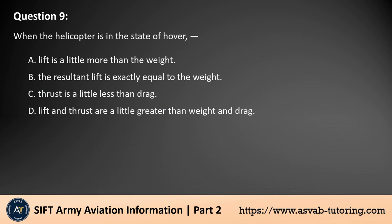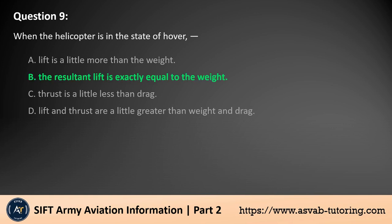Question 9. When the helicopter is in a state of hover: A. Lift is a little more than the weight. B. The resultant lift is exactly equal to the weight. C. Thrust is a little less than drag. D. Lift and thrust are a little greater than weight and drag. The answer is B. When a helicopter is in a hover, the resultant lift is exactly equal to the weight. The helicopter remains stationary because the lift generated by the rotor blades perfectly balances the weight, and thrust equals drag, resulting in no vertical or horizontal movement.